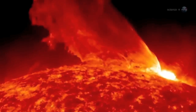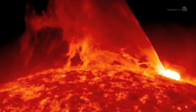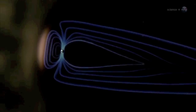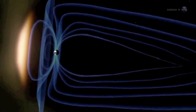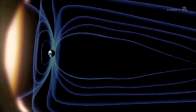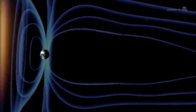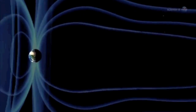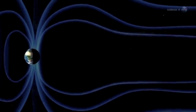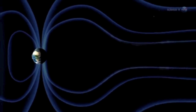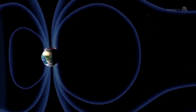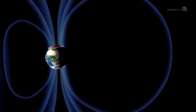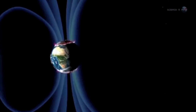Auroras are caused by solar activity. Gusts of solar wind and coronal mass ejections strike Earth's magnetic field, rattling our planet's protective shell of magnetism. This causes charged particles to rain down over the poles, lighting up the atmosphere where they hit.